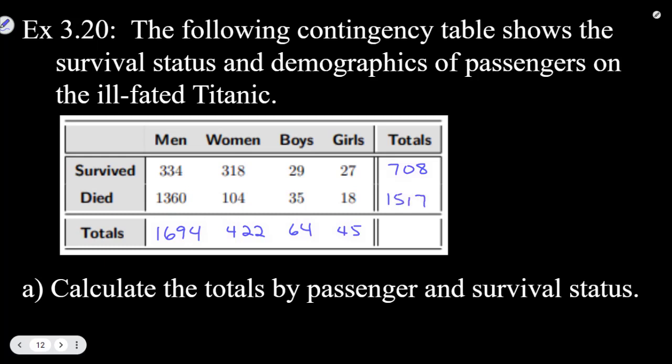And then if we add up the total altogether, 1517 plus 708, we get 2225. And I'm going to double check my bottom row also, 1694 plus 422 plus 64 plus 45. And yes, we get the same number, so that's good. It means we have our totals, and they should be correct.